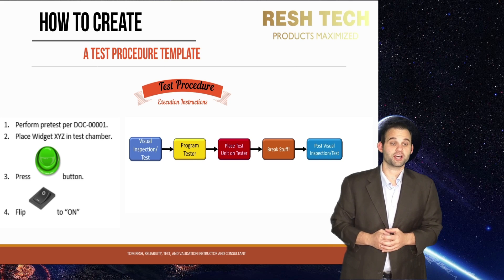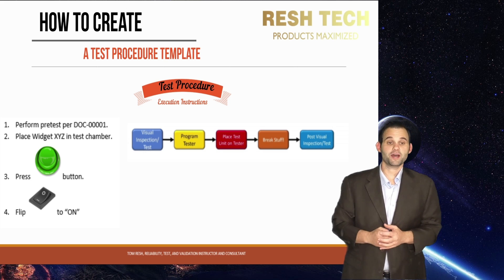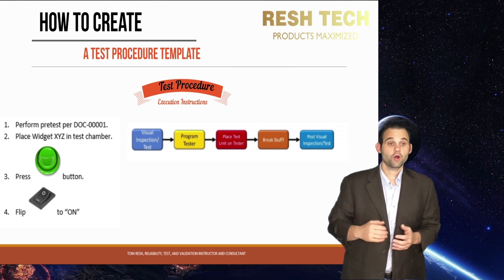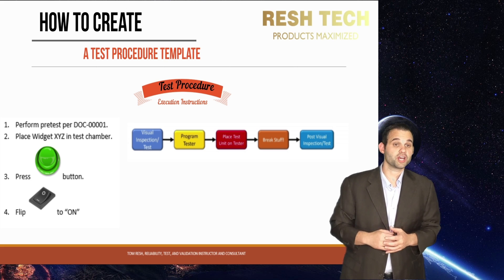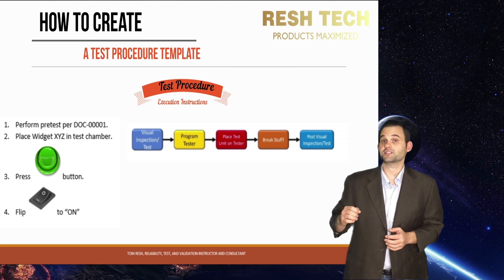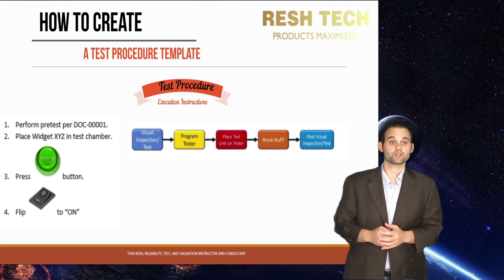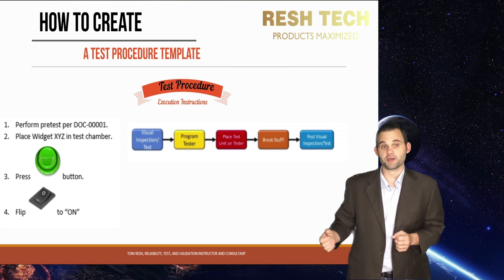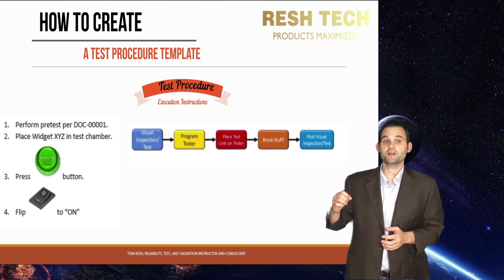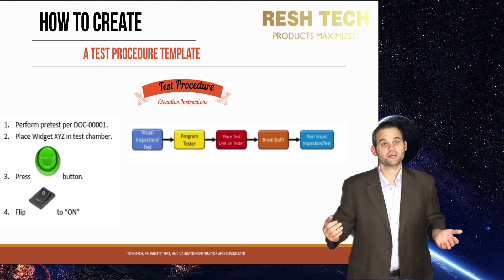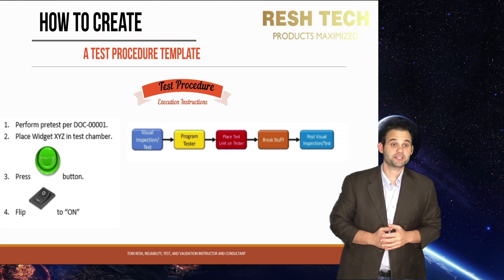I recommend using a flow diagram for your test procedure. Also, minimize worded instructions and leverage photos in place of extra verbiage — a picture speaks a thousand words. One other pointer: while English majors and perfectionists will cringe, minimize words like 'the.' For instance, write 'press green button' instead of 'press the green button,' or 'flip toggle switch on control panel' instead of 'flip the toggle switch on the control panel.' Reading instructions flow better when following along and performing tasks than trying to write an English paper, so minimize the extra 'the's in your verbiage.